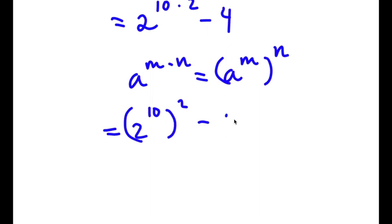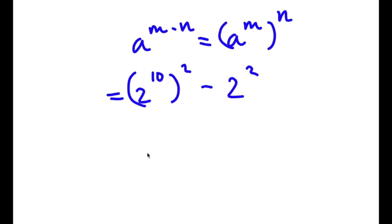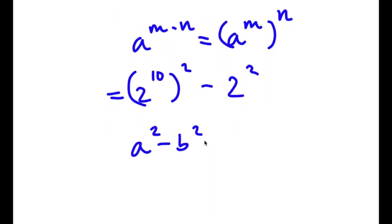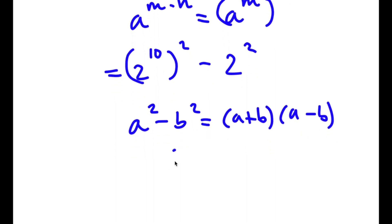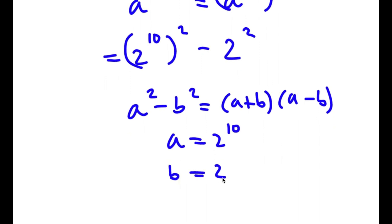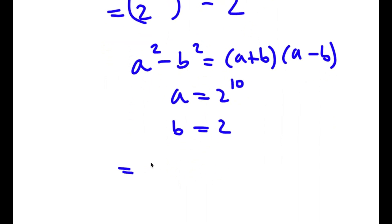Now 4, I can rewrite as 2 squared. If I have something in the form a squared minus b squared, this is equal to a plus b times a minus b. So in this case, a is 2 to the power of 10 and b is 2. So I have 2 to the power of 10 plus 2, times 2 to the power of 10 minus 2.